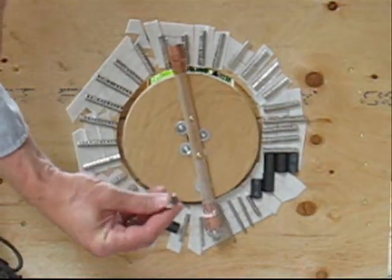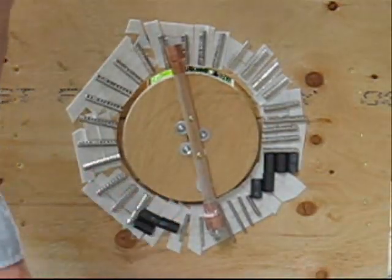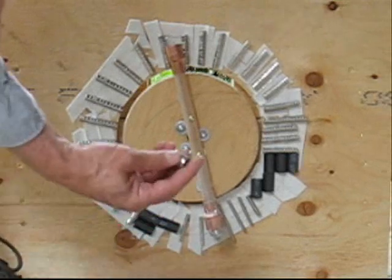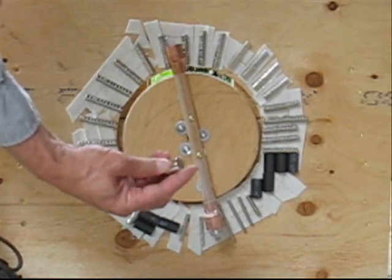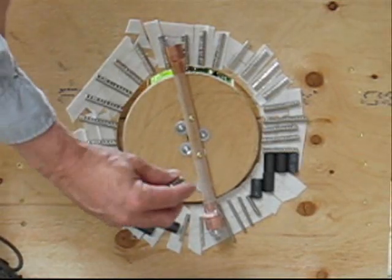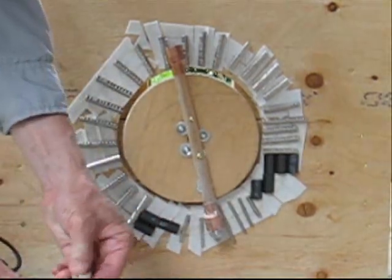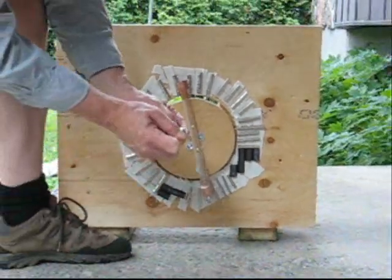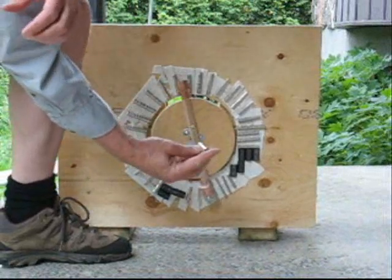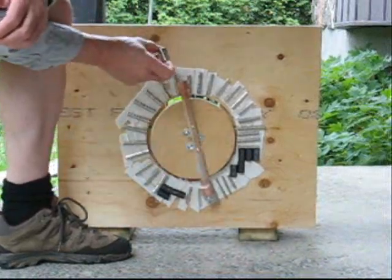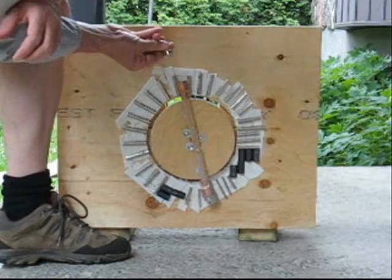This is a 3.8 by 7.8 Neo 35 pound pole, and 3.8 by half inch three quarter Neo 50 pound pole together. You've got to watch your fingers. They make one magnet that slides into the end like that.